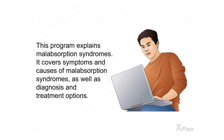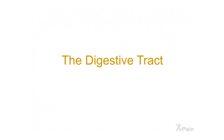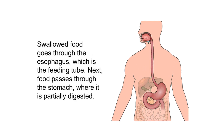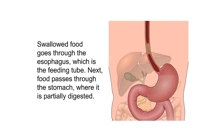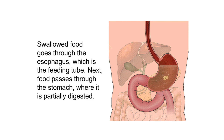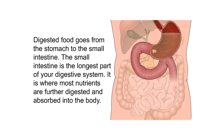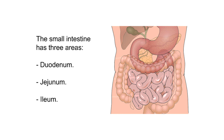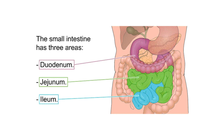This program explains malabsorption syndromes, covering symptoms, causes, diagnosis, and treatment options. The digestive tract is made up of organs through which foods pass. Swallowed food goes through the esophagus, then passes through the stomach where it is partially digested. Digested food goes from the stomach to the small intestine, which is the longest part of your digestive system and where most nutrients are absorbed. The small intestine has three areas: the duodenum, jejunum, and ileum.